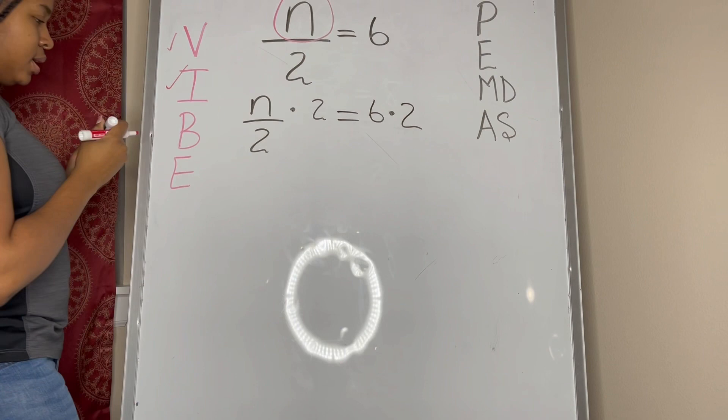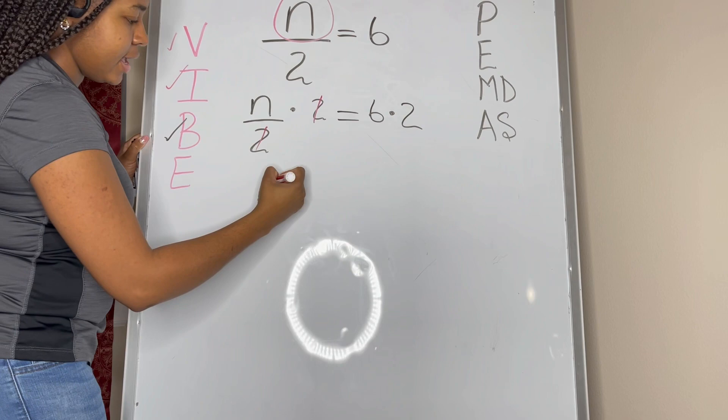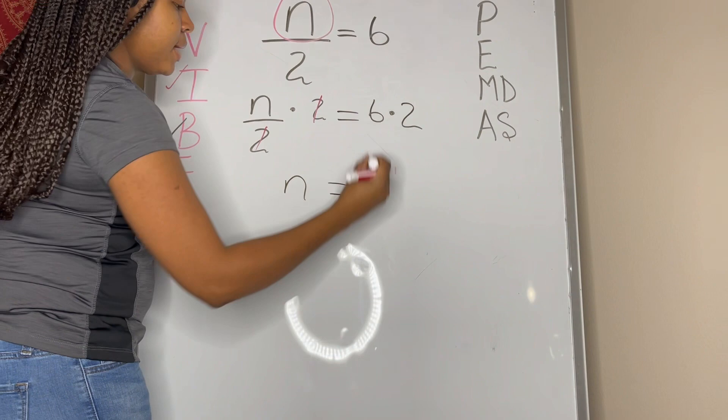Then we need to balance, so that's balanced, we're good. Now we have 2 divided by 2, so all that's left on this side is just n, and that is equal to 6 multiplied by 2, which is 12.